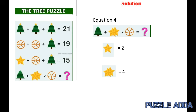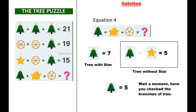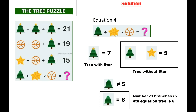The circle with 5 lines is equal to 5, compared to the circle with 6 lines which was equal to 6. Now, a tree with star is equal to 7, but a tree without a star is equal to 5. However, checking the branches of the tree in equation 4, it has 6 branches, so the value of that tree is equal to 6.